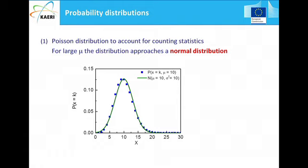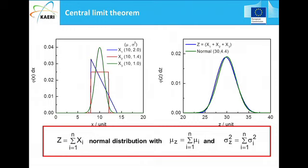For example, a Poisson distribution with a mean of 10 is shown alongside the corresponding normal distribution — they are almost indistinguishable. Above 30, you can practically assume normal distribution. For the central limit theorem: combining a Gaussian distribution, a triangular distribution, and a rectangular distribution gives a result (blue line) that closely matches the corresponding normal distribution (green). The Z value combining X1, X2, and X3 can be supposed normally distributed with corresponding parameters. These three theorems justify why we apply all these uncertainty propagation formulas.